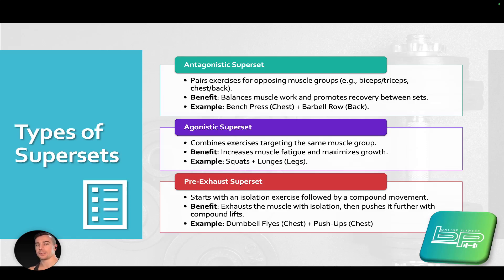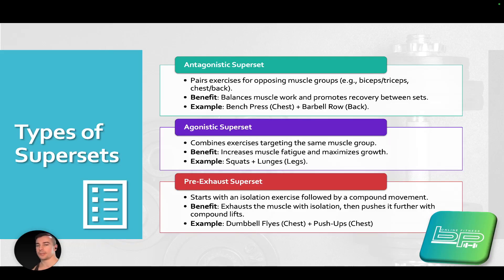The pre-exhaust superset is a little different. It starts with an isolation exercise followed by a compound movement. The benefit is that it exhausts the muscle with isolation and then pushes it further with a compound lift. An example would be a dumbbell chest fly followed by push-ups, where you're honing in on the chest first and then using multiple muscles with the compound movement.